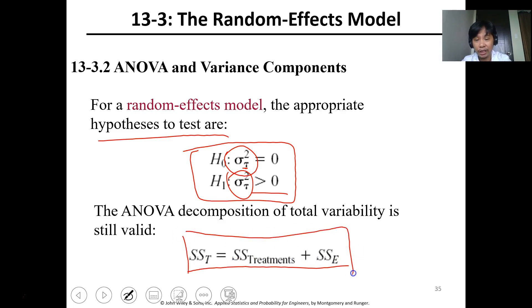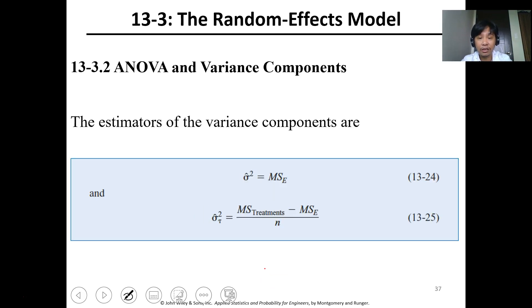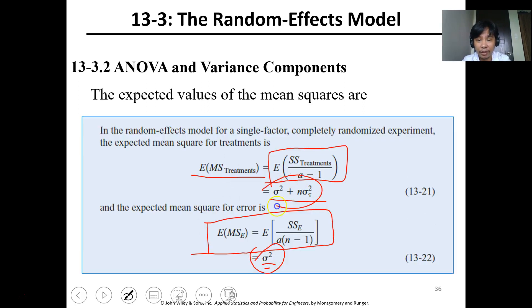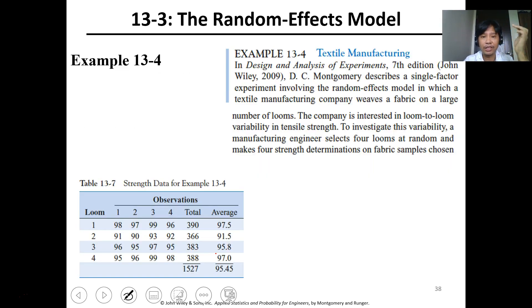The expected value of MS treatment is SS treatment over a minus one, and we have the expected MSE which is the variance. So if sigma squared is equal to MSE, then we have this expression as MS treatment minus MSE over n. This is the formula to use.